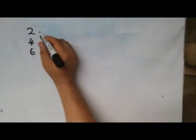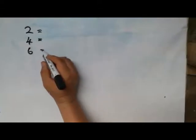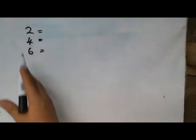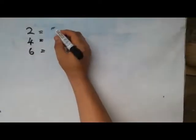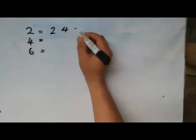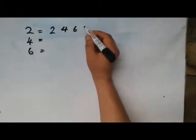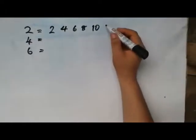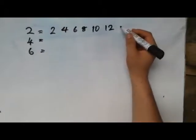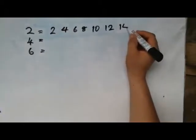All you need to do is to start multiplying each of the numbers with 1, 2, 3, 4, 5, 6, 7, 8 — until you get a number that all 3 numbers have in common. That becomes your lowest common multiple. So, if we say 2 times 1 gives us 2; 2 times 2 gives 4; 2 times 3 gives 6; 2 times 4 gives 8; 2 times 5 gives 10; 2 times 6 gives 12; 2 times 7 gives 14. Let's stop here.